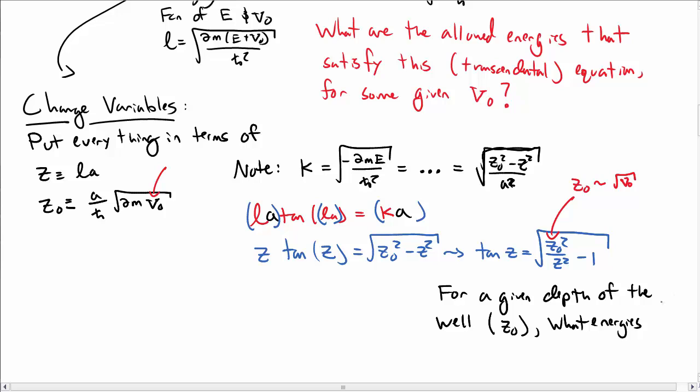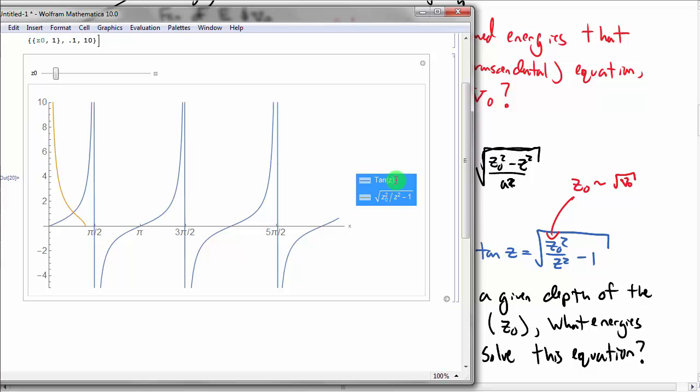The way we're going to do that is to plot both sides and look where they happen to be equal. In this plot, I have tangent Z and the square root, and I have Z naught which I can adjust. Right now I have one intersection, so I have one energy bound state.